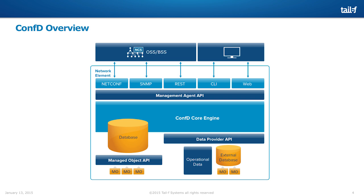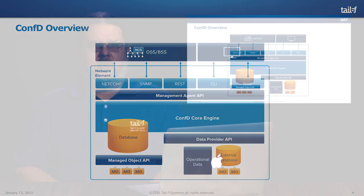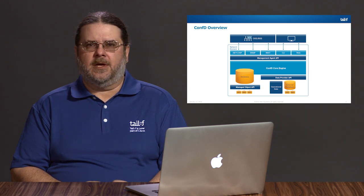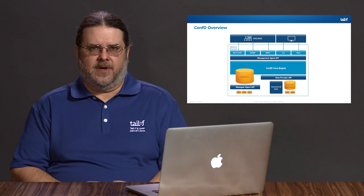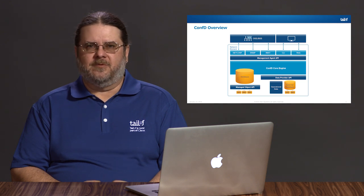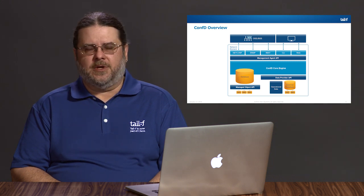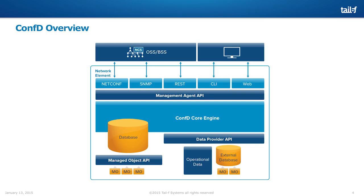ConfD has available a variety of northbound interfaces: NetConf, SNMP, Juniper and Cisco CLIs, REST, and also a web interface. With the free version of ConfD, you have NetConf and a CLI available for use during development only. With the premium version of ConfD, you have all of the different northbound interfaces available. ConfD also provides a pre-integrated database, which we call CDB, which allows you to store configuration data and optionally operational data.